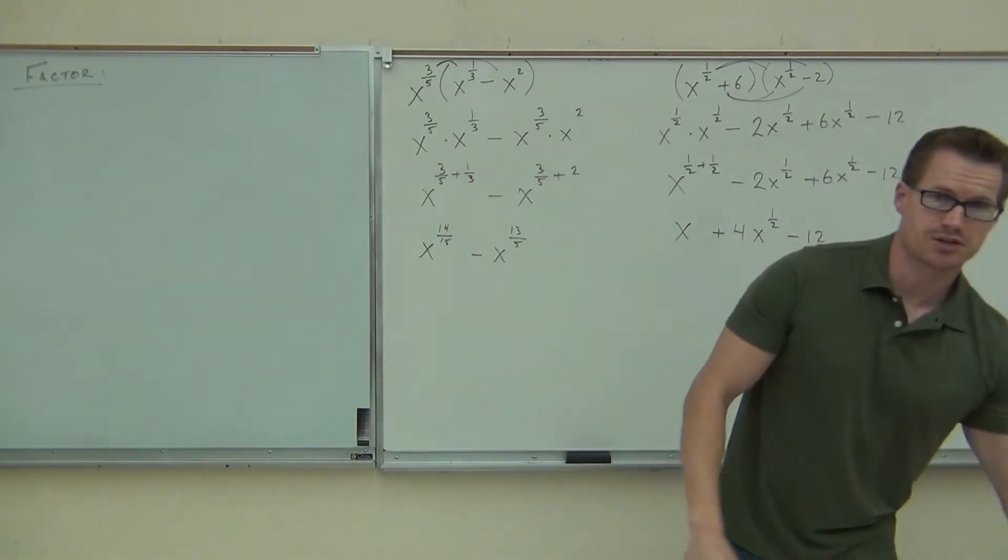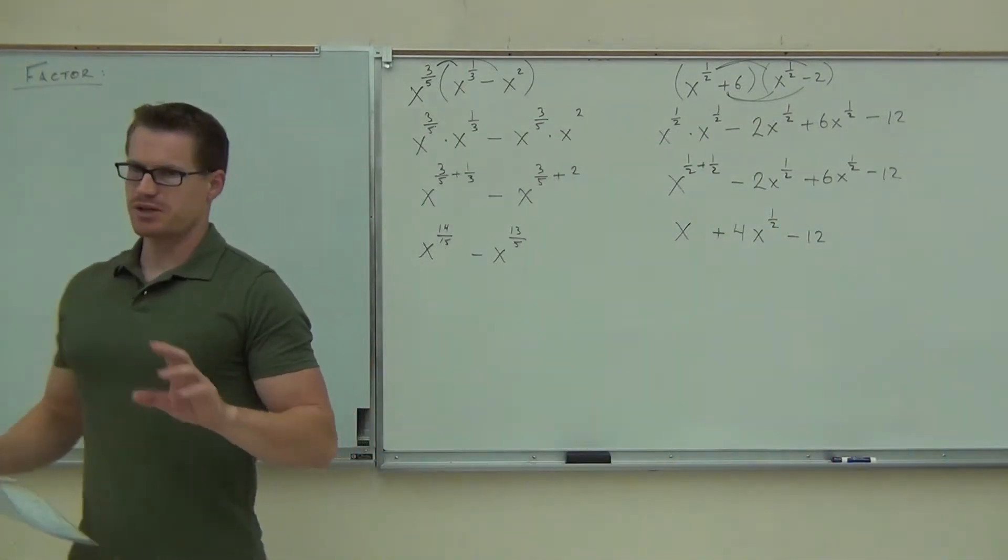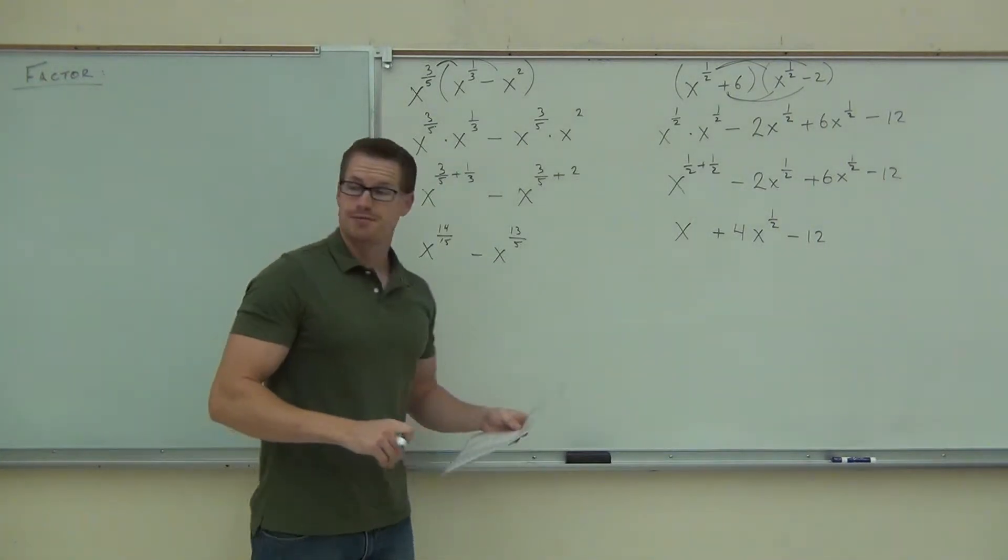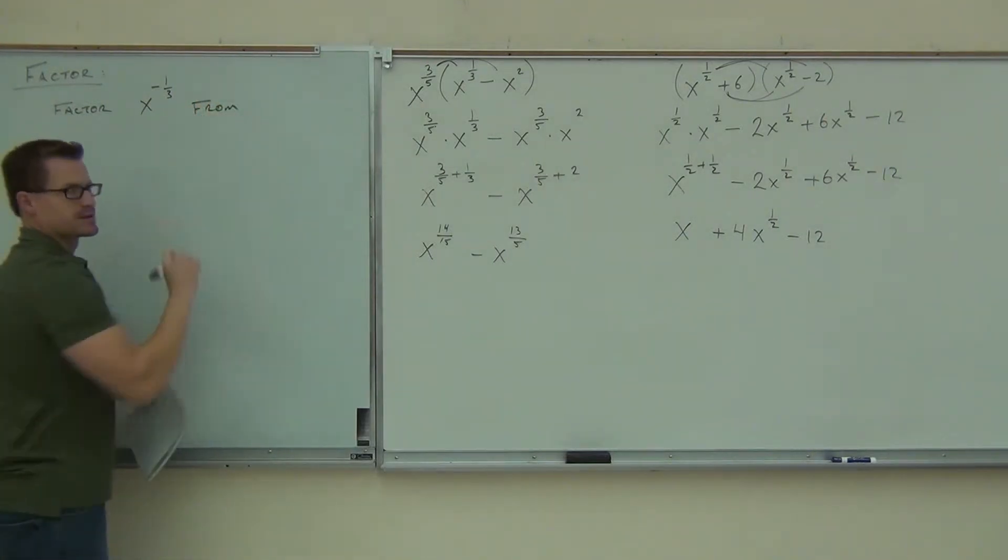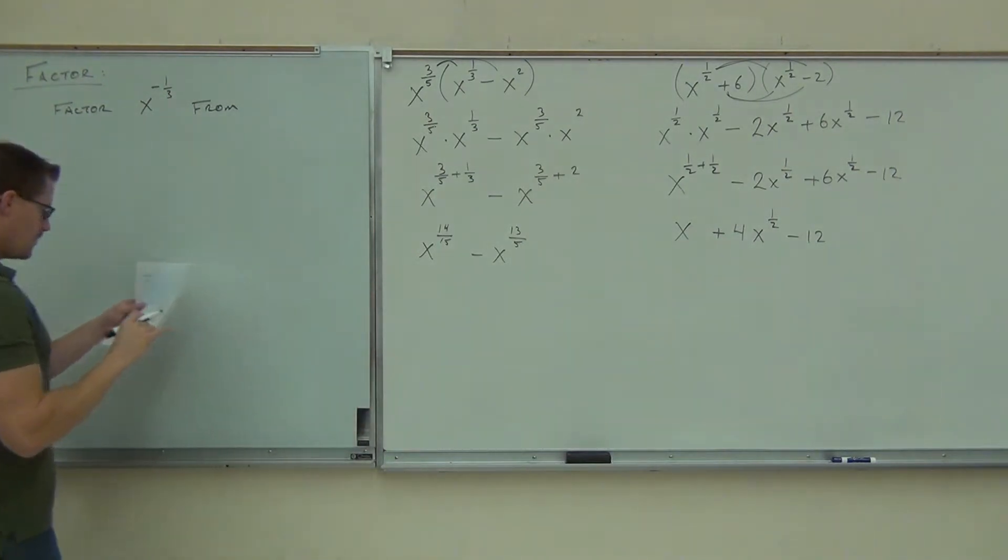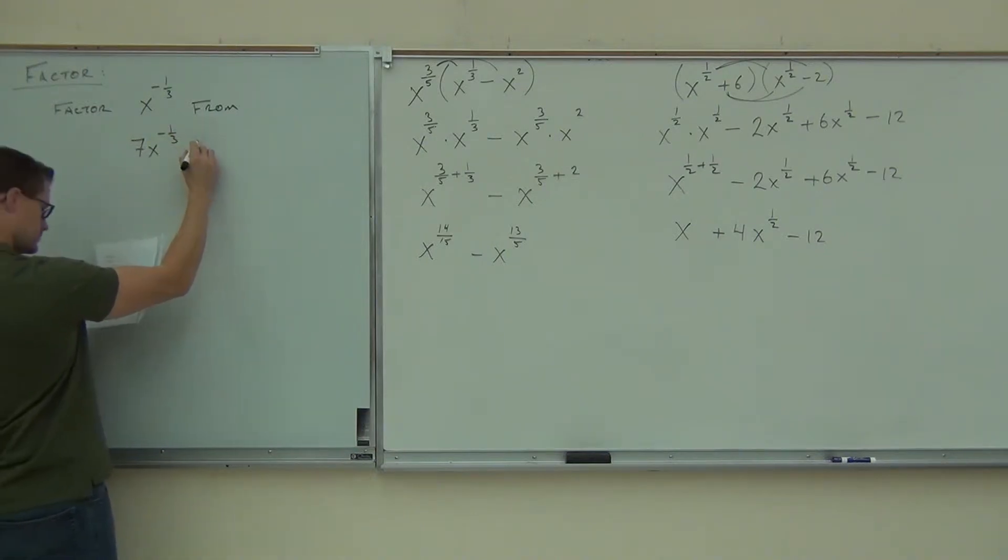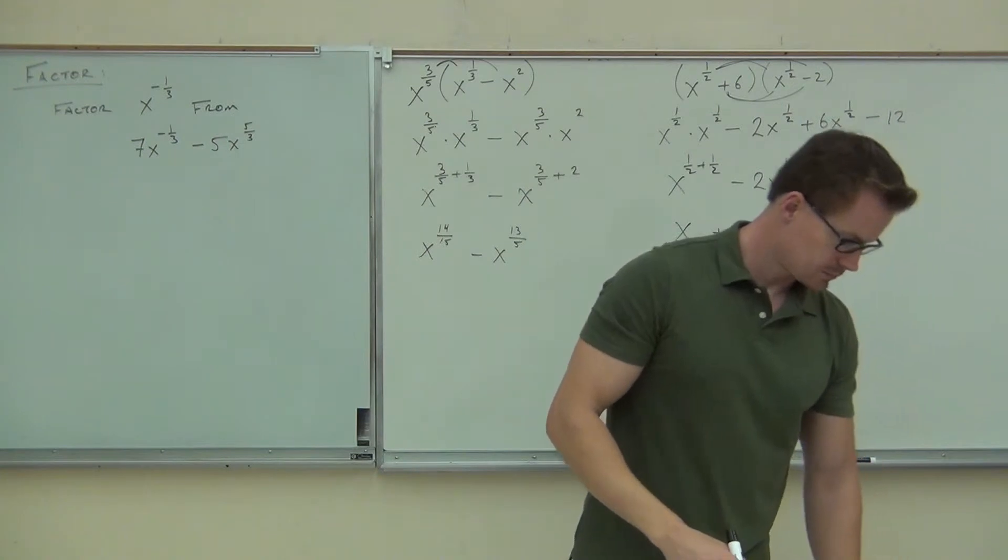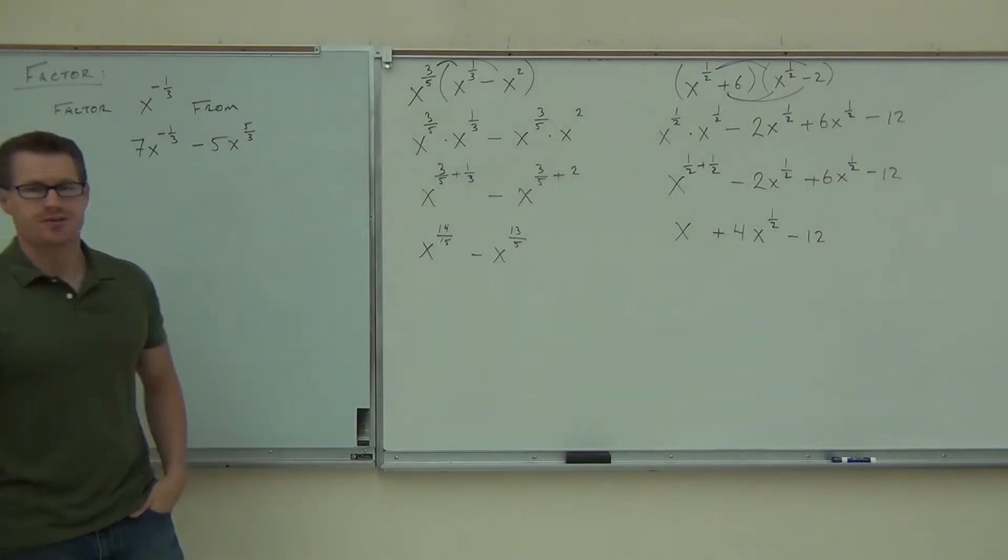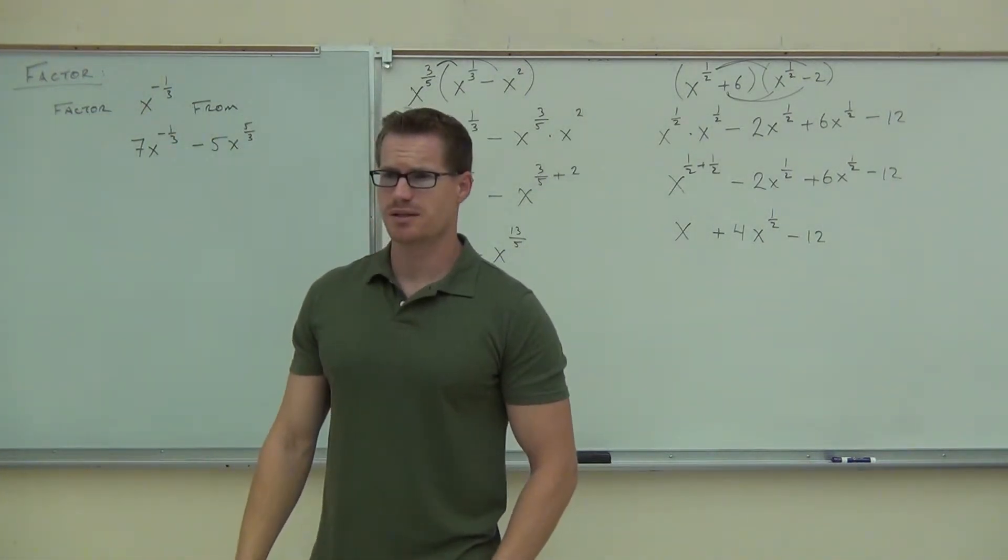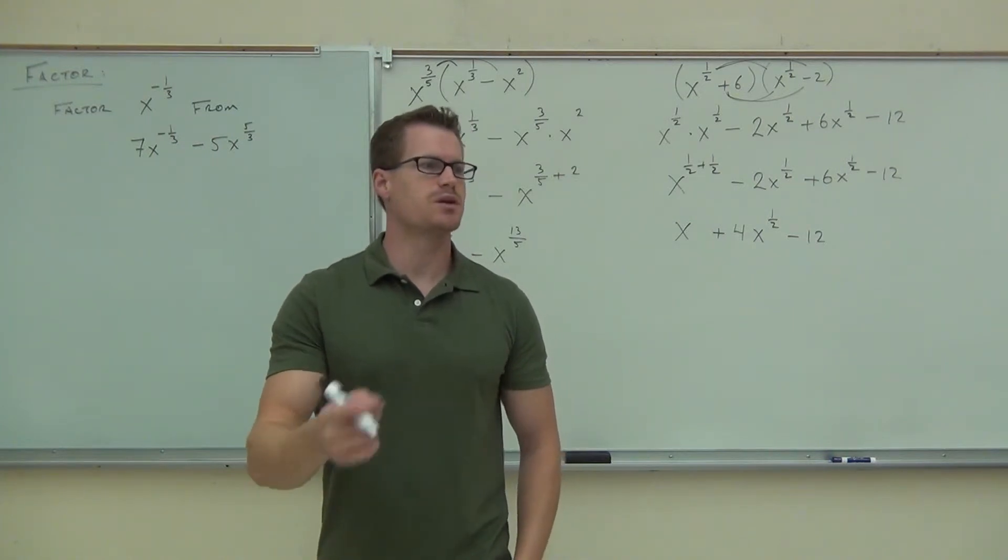We're going to learn how to factor using these rational exponents. Now, I'm going to do this kind of slowly. I'm going to make sure you really get this. We're going to do it step-by-step, just like we're doing our distribution. Because if you try to do this in your head, sometimes it gets a little bit messy. If you're really not paying attention to what's going on. What we're going to do is we're going to try to factor x to the negative one-third from—now this is kind of nice about factoring, I give you what you're supposed to factor. From that, factor x to the negative one-third from 7x to the negative one-third minus 5x to the five-thirds. Oh, my gosh, how you chose a factor of fractions. That doesn't even make sense. What the heck?